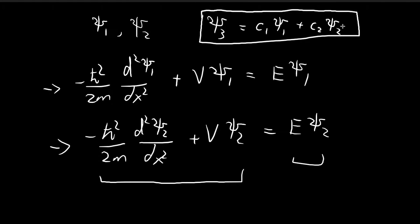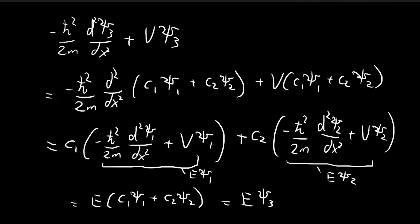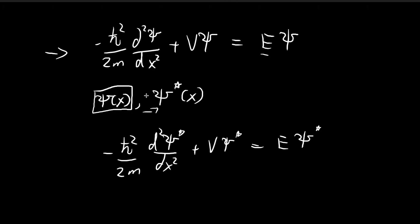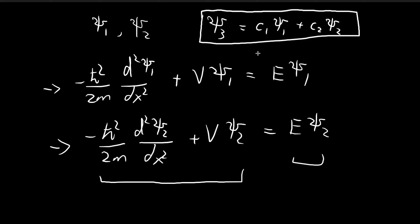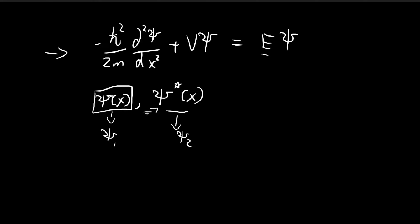We have now proven that if ξ₁ and ξ₂ are solutions to the time-independent Schrödinger equation, then ξ₃ expressed as their linear combination is also a solution. This brings us back to the original problem: ξ(x) satisfies the time-independent Schrödinger equation, and we know the conjugate ξ*(x) also satisfies it, so any linear combination of ξ and ξ* must also be a solution — treating ξ as ξ₁ and ξ* as ξ₂.